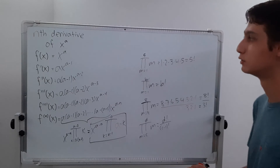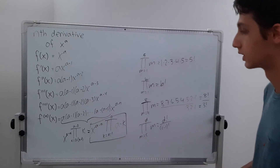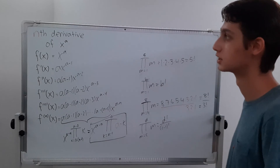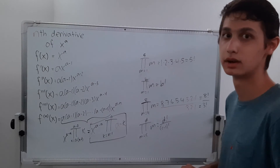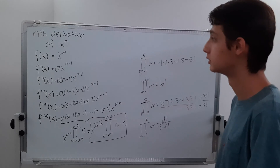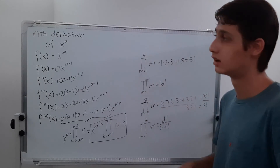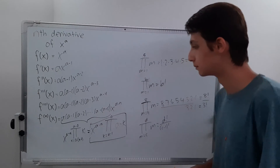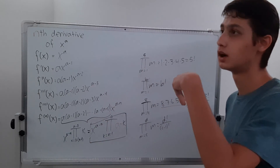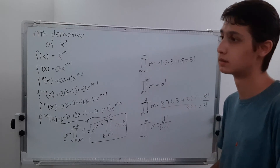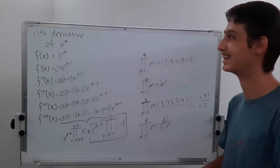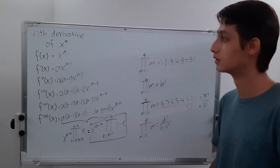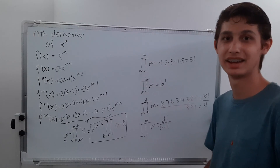Zero factorial equals 1 — I'll make a video on that in the future because it's very interesting. There's also a related function called the gamma function, which I'll cover in upcoming videos. I'm planning to do the nth integral of x to the a, nth derivatives of other functions like e to the kx, and more on the pi and gamma functions. I think it's very interesting to extend the idea of derivatives this way, so I hope you stick around. Thanks for watching, and I'll see you in a future video — bye.